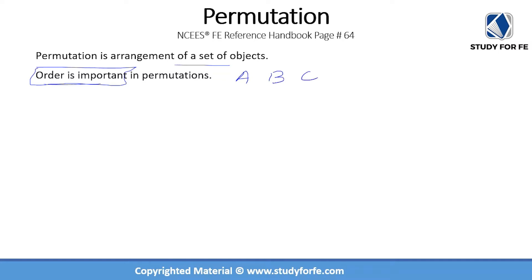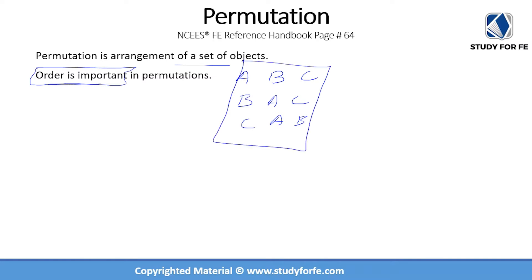In terms of permutation, A B C and B A C or C A B are three different permutations. But all of these three will qualify as a single combination, because combination doesn't care about the order whereas permutation cares about the order.